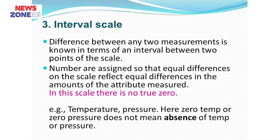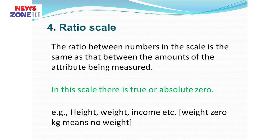Another scale is interval scale, in which zero is not true or real. For example, if temperature is 0 degrees Celsius, it does not mean there is no temperature. Examples are temperature and pressure. In ratio scale, zero is true — like height, weight, and income. If income is zero, that means the person does not earn anything, so zero is meaningful. This is a ratio scale.